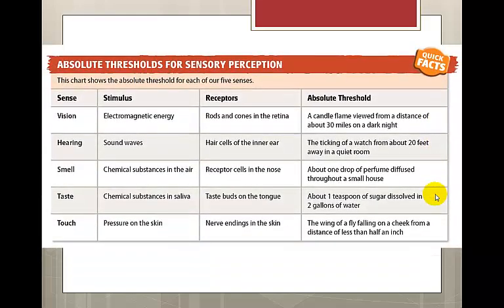Here is a chart of some various measurements of a person's absolute threshold for sensory perception. In vision, you may be able to see a candle flame viewed from a distance of 30 miles on a dark night — that is how sensitive your eyes are. You might be able to hear the ticking of a watch from about 20 feet away in a quiet room. You could smell a drop of perfume diffused in a small house. For touch, you could feel the wing of a fly falling on your cheek from a distance of less than half an inch.